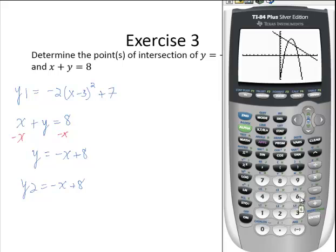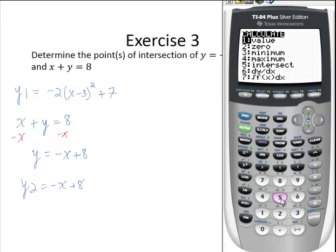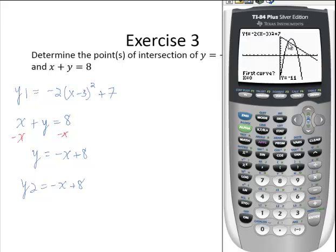So I will need to run the calc intersect command twice. Second calc, fifth option. And let's find the left intersection. My cursor is at 0, negative 11 right now, so a little bit off the screen. So I'll move to the right and get close to the point of intersection and hit enter three times. And so here's one point of intersection.